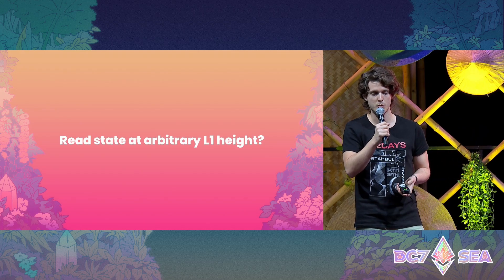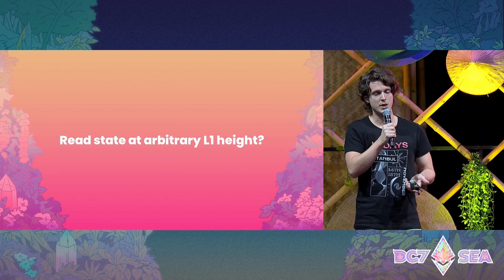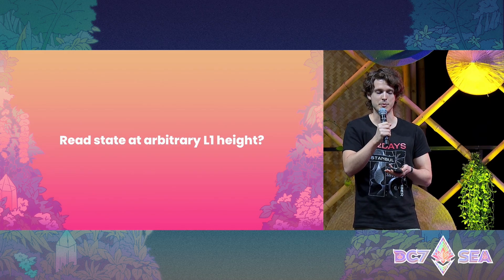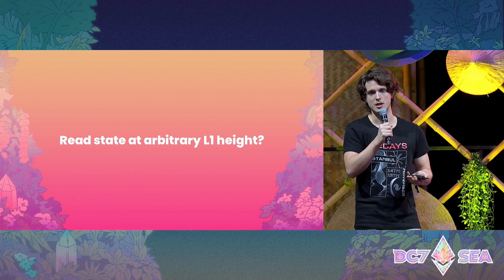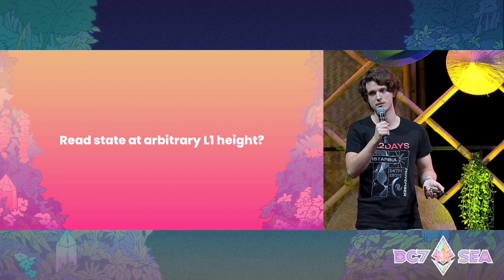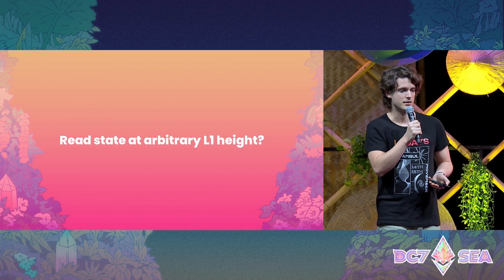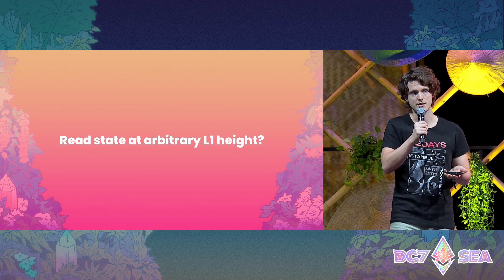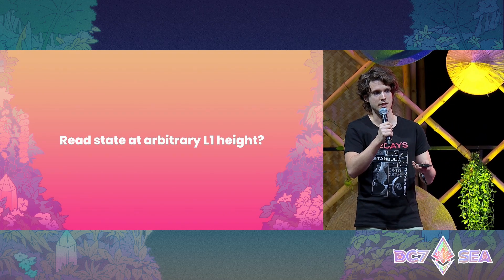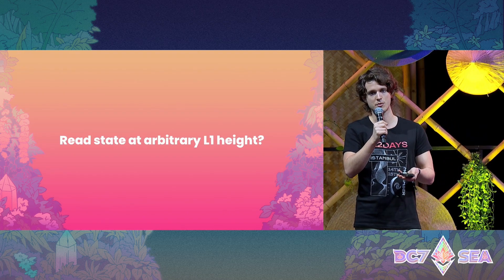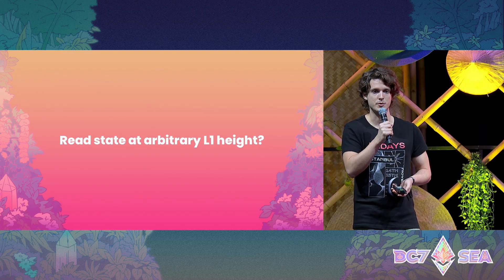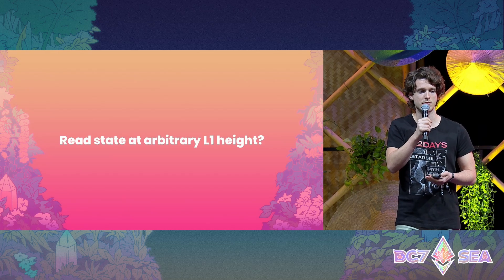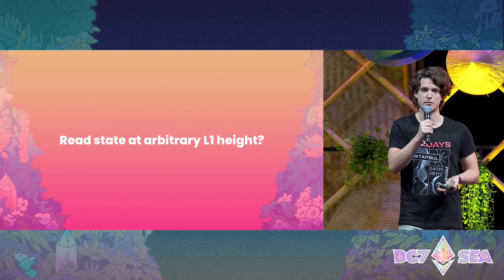I want to highlight three open questions. One question we received from developers is: do we want to allow L2 applications to read L1 state at arbitrary heights — not just the latest L1 block but older states? For some applications this is definitely required, but it has drawbacks. For instance, if you allow reading old states, nodes must connect to an archive L1 node, and for some clients like Reth, this may not even be possible because they cannot serve historical get_proof requests.